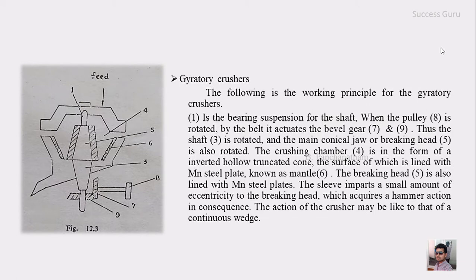The left side image shows the Gyratory Crusher working model. You can see the bearing suspension for the shaft. When pulley 8 is rotated by the belt, it activates bevel gear 7 as well as gear 9, thus the shaft 3 is rotated and the main conical jaw — also called the breaking head — is also rotated.